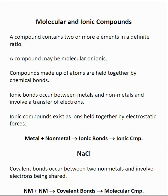In general chemistry, there are two main types of compounds that we will discuss: molecular compounds and ionic compounds. A compound is where we have two or more elements placed in a definite ratio with each other. This is more than just singular elements — we are beginning to combine elements together to form more complex species.